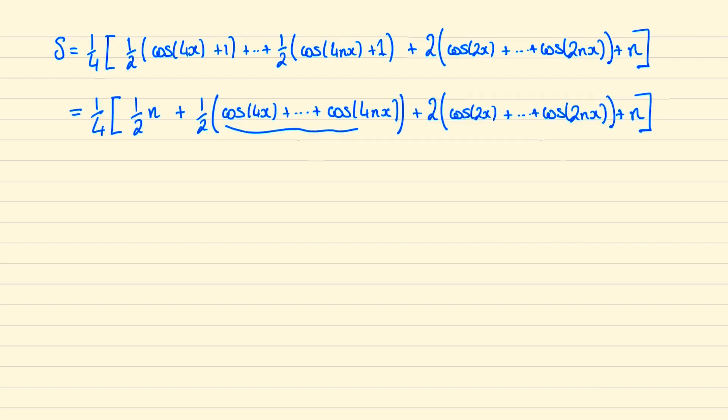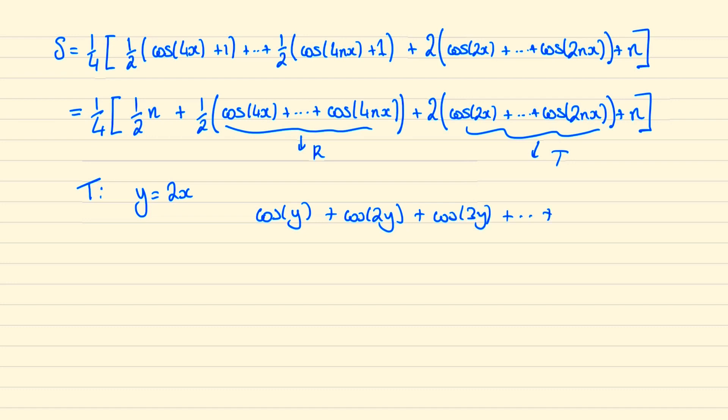Now we'll need to look at these two series here, so we can call this first one here r and this second one here t. If we just consider this series t first and looked at what would happen if y were 2x, then we'd be solving the series cos y plus cos 2y plus cos 3y and upwards until we reach cos ny.